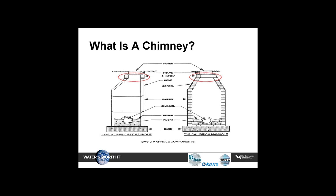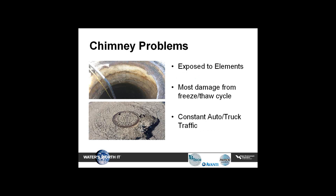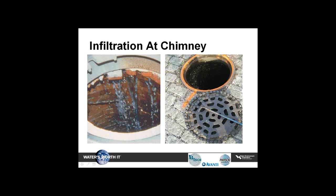When we talk about a chimney of a manhole, we are speaking about the area just below the frame and extending to the corbel area — I've circled this area on the illustration in red. The chimney area is primarily for the adjustment of the frame in relation to the surface area. Our most common problems occur because the chimney is so close to the surface. Chimneys are exposed to the elements, especially when we have an open-grade manhole cover. The chimney is where we find the most damage from the freeze-thaw cycle.